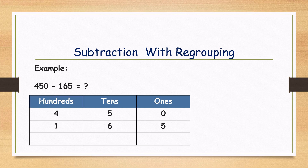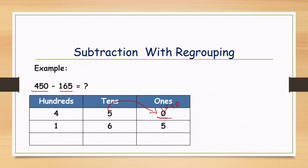Here we are taking four hundred and fifty minus one hundred and sixty-five. We arranged already in the table in the respective places. The ones digit values are zero and five. Zero is less than five, that's why we can't do subtraction directly. We will take the borrowing. Cross that zero and put ten. We are taking ten. What is ten plus zero? Ten.